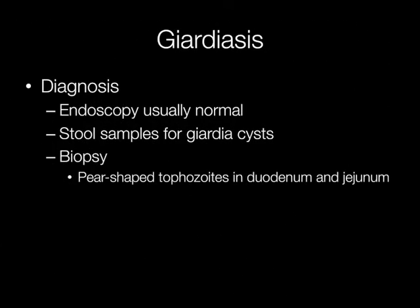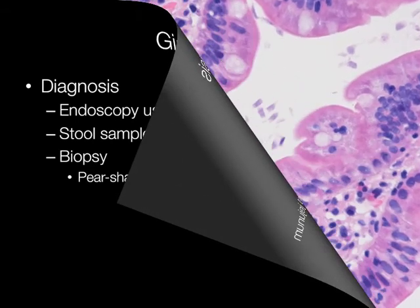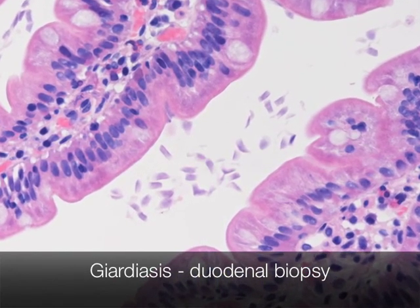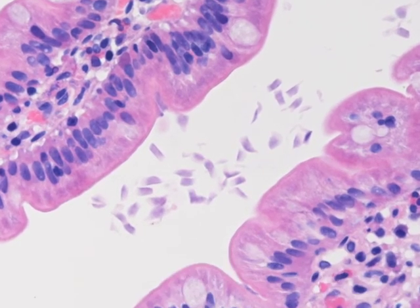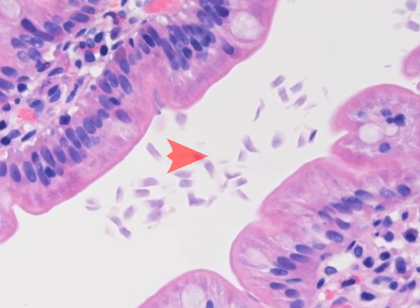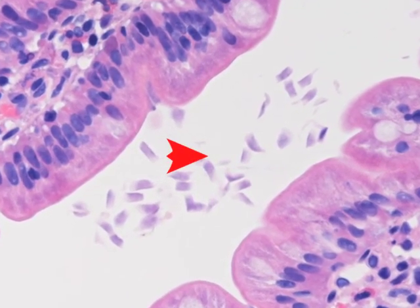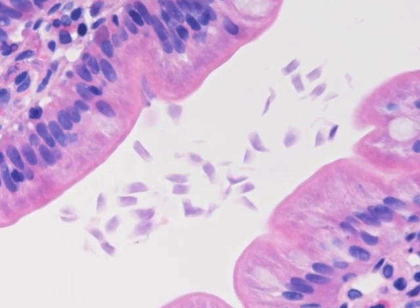Giardiasis may be diagnosed through finding Giardia in stool samples, or the pear-shaped trophozoites may be seen in duodenal or jejunal biopsies, though endoscopy is usually normal. This is a duodenal biopsy and you can clearly see multiple Giardia parasites between the villi.